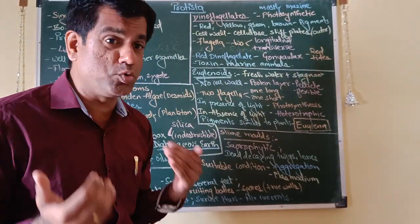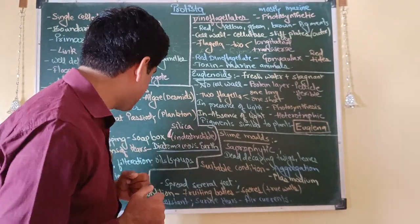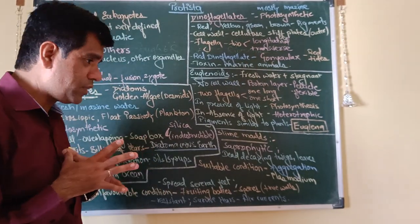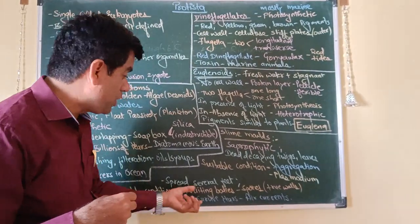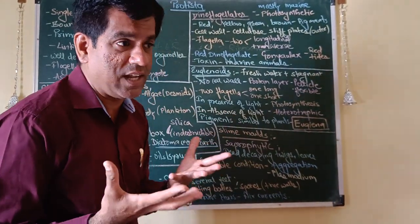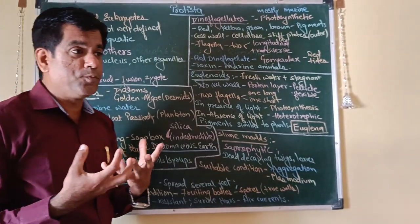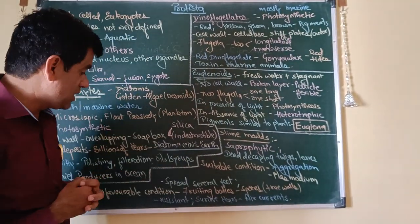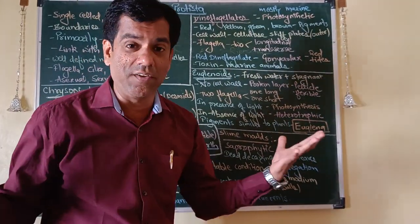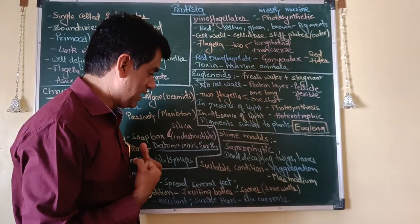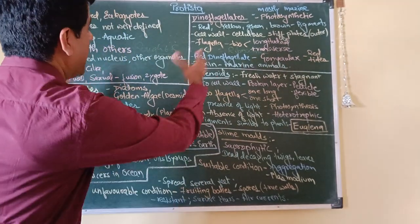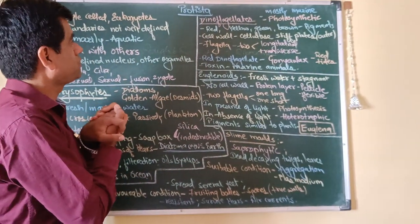Under favorable or suitable conditions, they form an aggregation called plasmodium, which spreads several feet. When the conditions are not favorable, they form elaborate fruiting bodies, and these plasmodium bodies now produce spores which have two walls. It is these spores which can survive the adverse environmental conditions. They are resistant and they can survive for years. We should learn from these spores that they can survive under adverse environmental conditions. They are spread to different places through air currents.